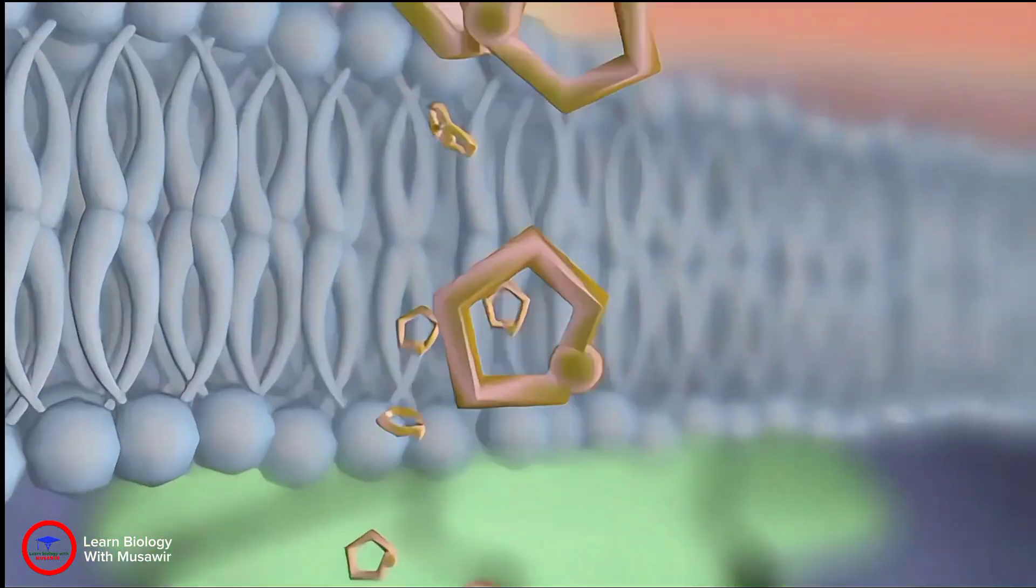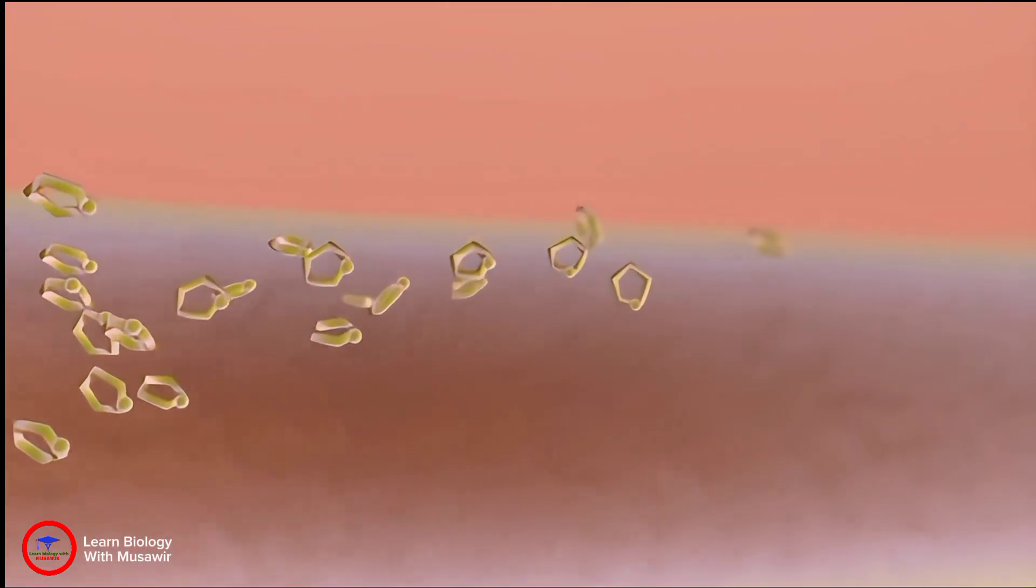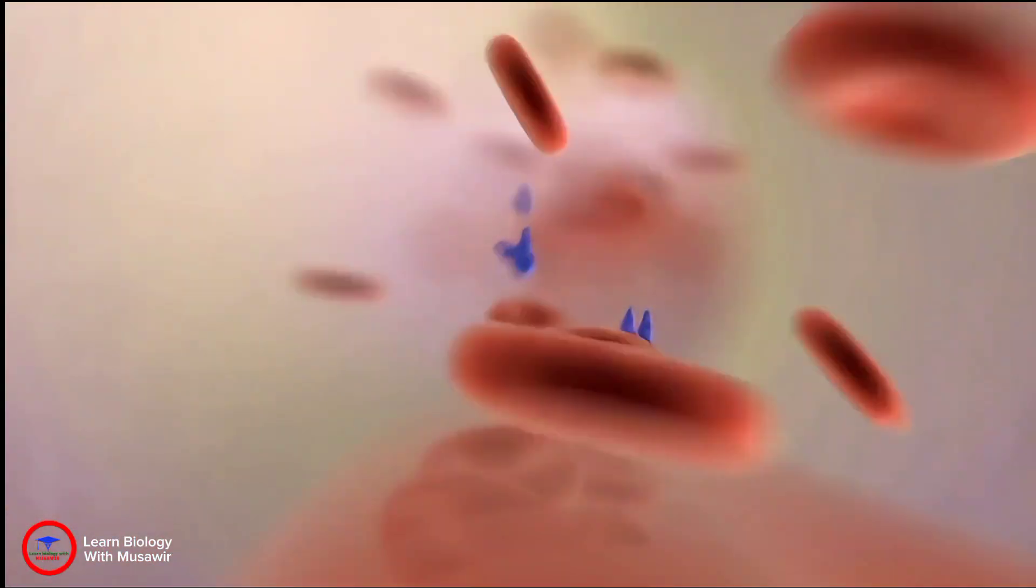When this tiny domino effect is triggered inside cells, some amazing things can happen. Other signaling cascades triggered during the stress response result in a variety of physical reactions.